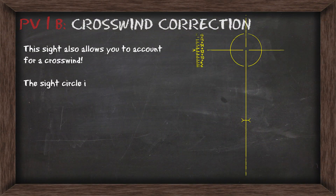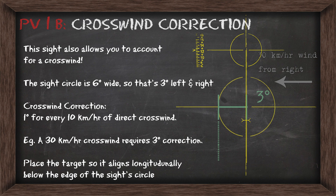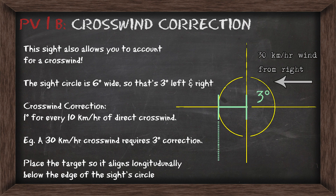This sight corrects for crosswind as well. The sight circle is going to be six degrees wide — three degrees left and right. If you're going to perform a crosswind correction, it's one degree of correction for every 10 kilometers per hour of direct crosswind. So if you had 30 kilometers per hour of crosswind, you need three degrees of correction, placing the target on the edge of the sight. When dropping the bomb, you want to have the target aligned with a line that moves down from that correction point in the sight.